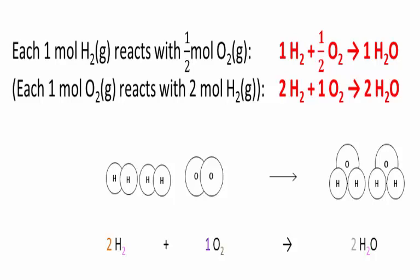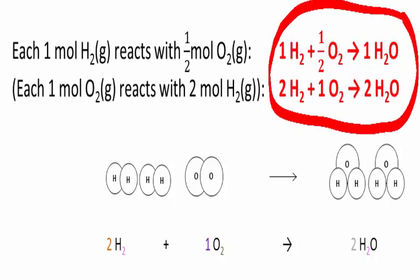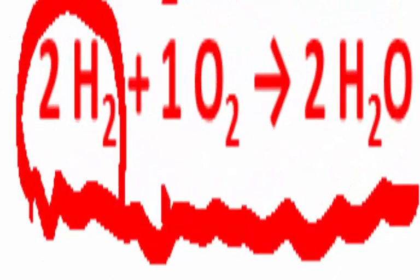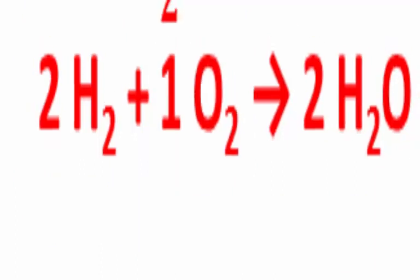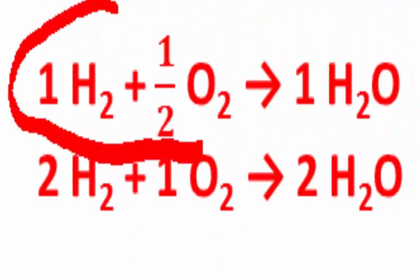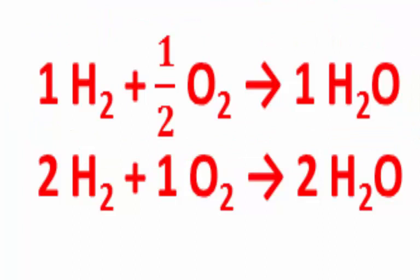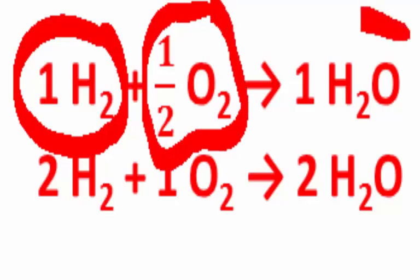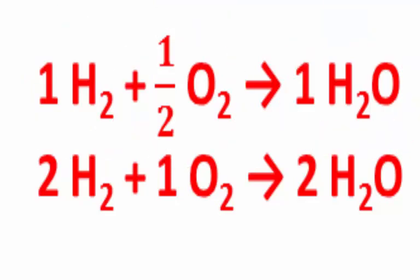Let's examine the equation. It can be written in a number of different forms. The one we normally write gives the simplest ratio of whole numbers: two hydrogen molecules for every one oxygen molecule to give two water molecules. But it can also be written by dividing everything through by two — every one hydrogen molecule needs half an oxygen molecule and produces one water molecule. While that doesn't really make sense for molecules, it can sometimes be useful to help us think about things.